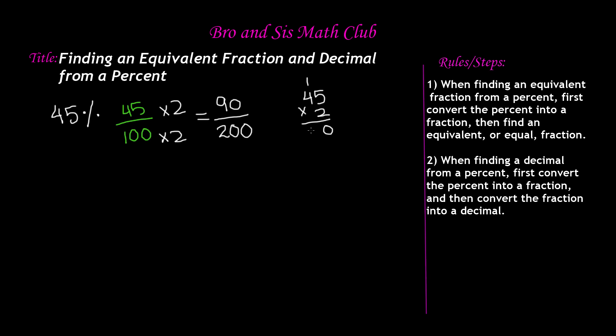4 times 2 is 8 plus the 1 is 9. So 45 times 2 equals 90. So that means 45 over 100 is equal to 90 over 200.